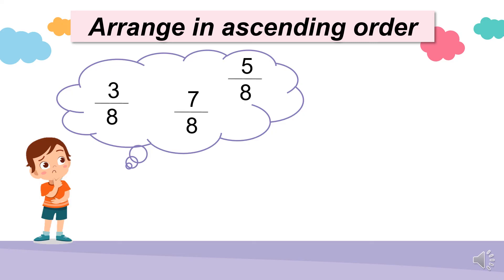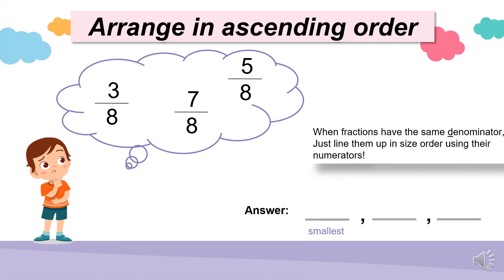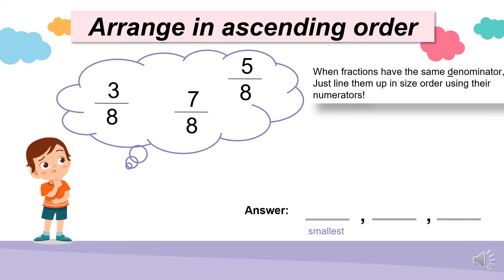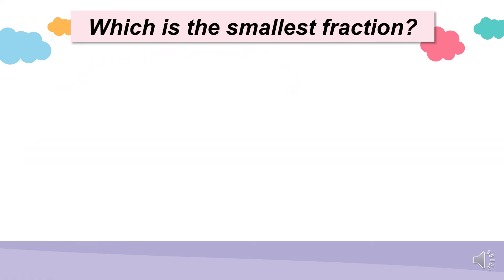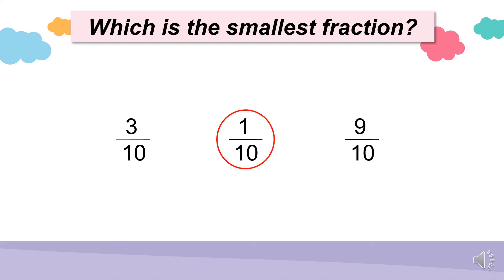Arrange these fractions in ascending order. Ascending means we start with the smallest. Since the fractions have the same denominator, we just arrange them by their numerators — we don't need to use fraction strips. The smallest numerator is 3, hence 3 over 8 is the smallest fraction. Next one down is 5 over 8, and the biggest numerator is 7, so 7 over 8 is the greatest fraction. Which one is the smallest fraction: 3 over 10, 1 over 10, or 9 over 10? The answer is 1 over 10. Remember, since the denominators are all the same, the numerators tell the fractions in order, so the smallest numerator bears the smallest fraction.